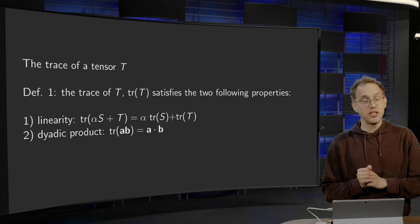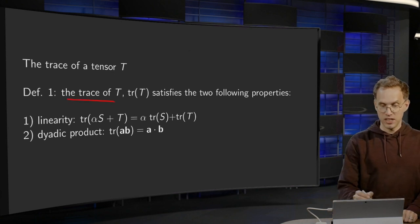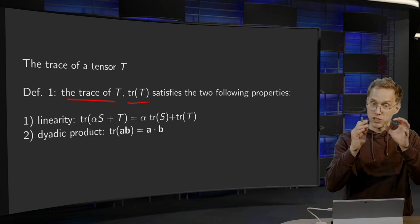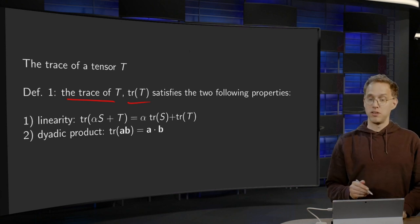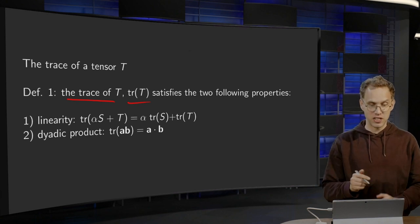Again, the definition may look a bit odd. The trace of a tensor T, denoted by tr(T), satisfies the following properties, which already defines what a trace is.